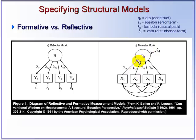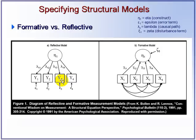In the formative model, as shown in Figure B, the arrows point towards the construct, indicating that the change comes from the measurement items towards the construct. In the reflective measurement model, the change comes from the construct, and the arrows are therefore pointed towards the measurement items.